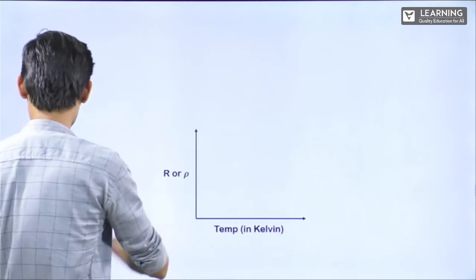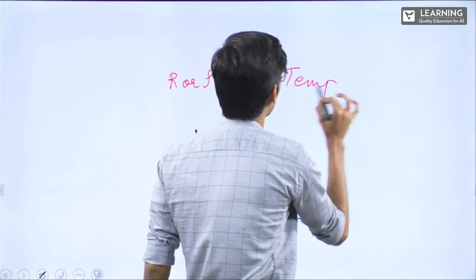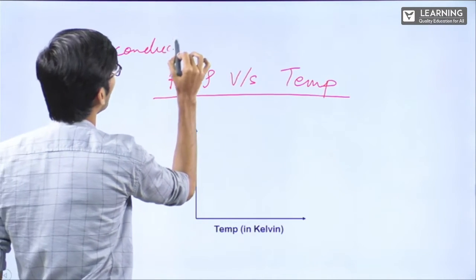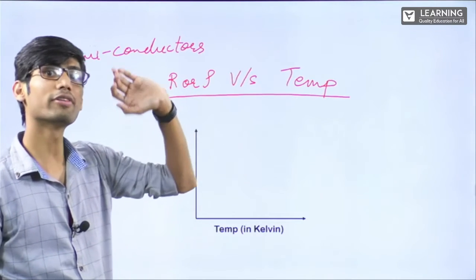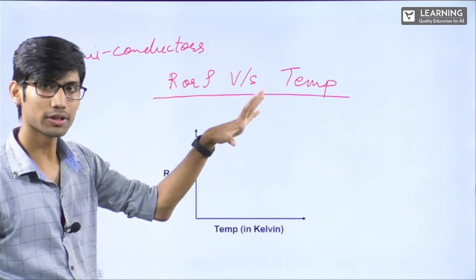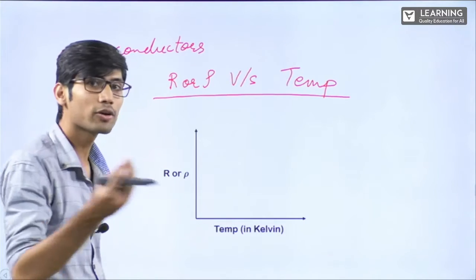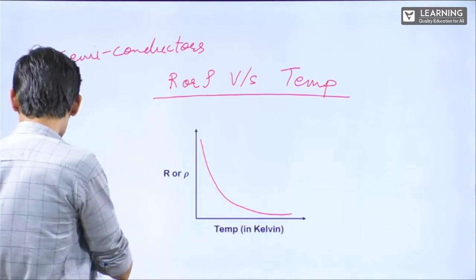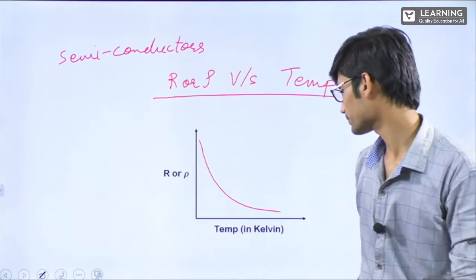Now, if I want to make the graph of R or ρ versus temperature for semiconductors: since semiconductors do not conduct initially, their resistivity will be very high. Later on, on adding impurities, they become semiconducting. As temperature increases, resistivity starts decreasing. So the graph decreases as temperature increases for semiconductors.